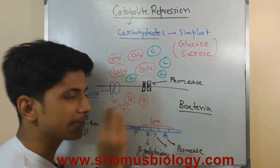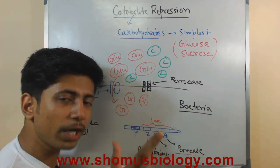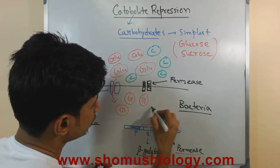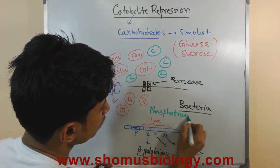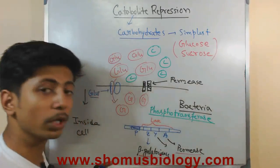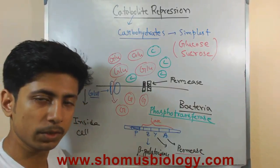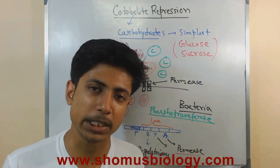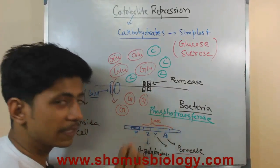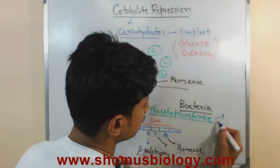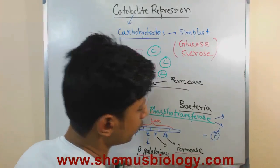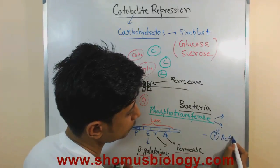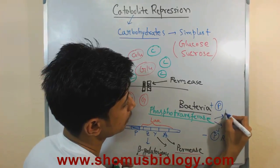When glucose is present in high amounts inside the cell, it turns on and off an important cellular signaling molecule called phosphotransferase. There are different examples such as E2A, depending on the type of bacteria. When phosphotransferase is dephosphorylated — meaning no phosphate group is present — it becomes active. When the phosphate group is added, it becomes inactive.